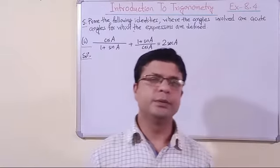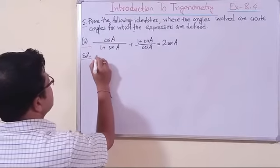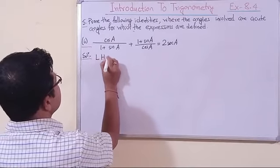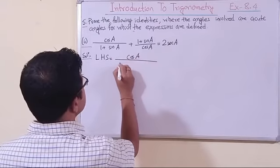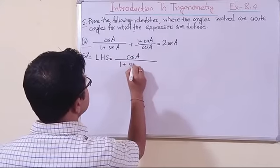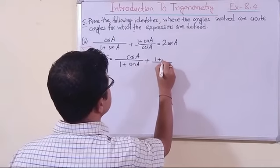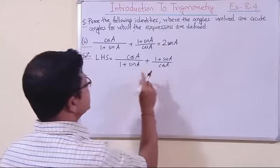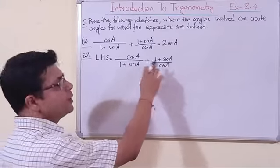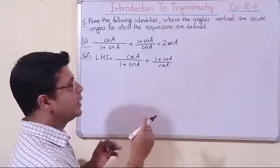Now dear students, we have taken question number 2 from question 5. Let us write the left hand side: it is cos A / (1 + sin A) + (1 + sin A) / cos A. These two are already in simplest form in terms of sin A and cos A, so what is to be done?